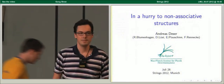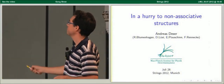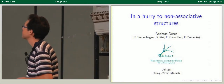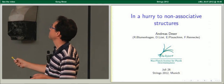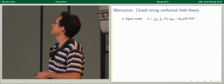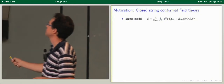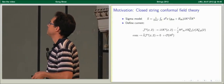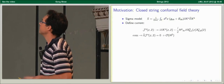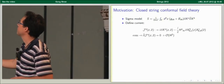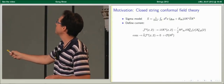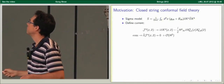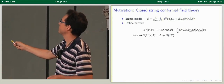I want to present work done with R. Blumenhagen, Dieter Lust, Eric Plauschinn and Felix Rennecke. It's about non-associative structures. As motivation, let's take bosonic string theory with a B-field background. We were able to define a current which is a slight modification of the free current, and one can show that it's holomorphic — and also anti-holomorphic — up to linear order in the H-flux.